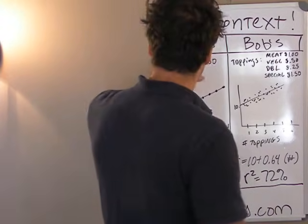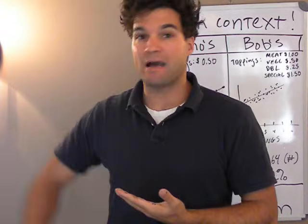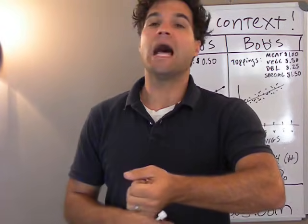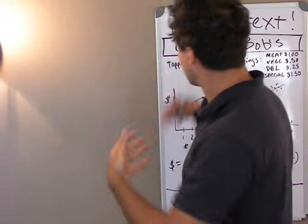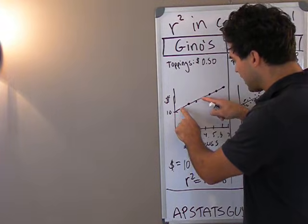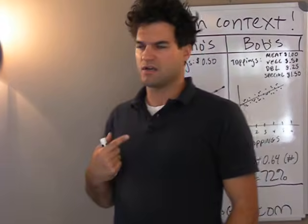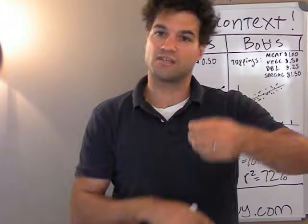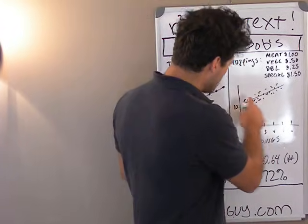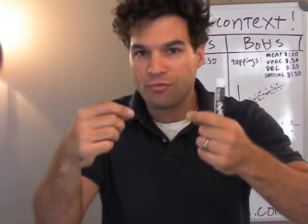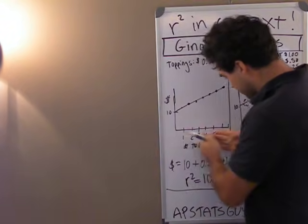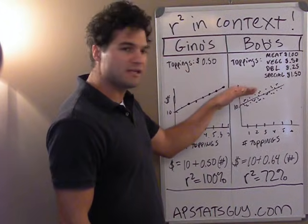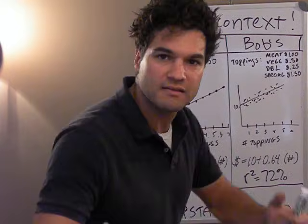So I sat outside of Gino's for seven days, and as people came out I asked: how many toppings? What was the price? I collected hundreds and hundreds of data points and got a scatterplot. I fit a line to it and it matched perfectly — it was weird. Then I went outside of Bob's and made a list of the number of toppings versus the prices. I made a scatterplot and noticed there was some scatter, but there was still a trend. In both restaurants, the more toppings, the higher the price of the pizza would be.